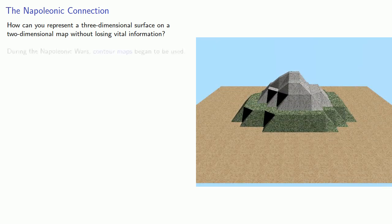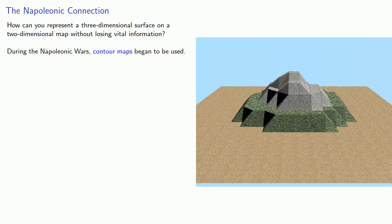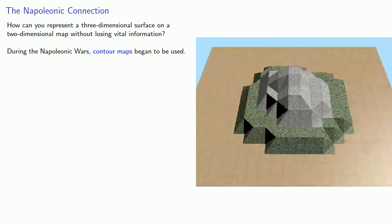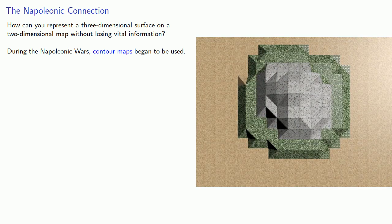And so during the Napoleonic Wars, contour maps began to be used, and the basic idea is that every point along a contour line had the same height.